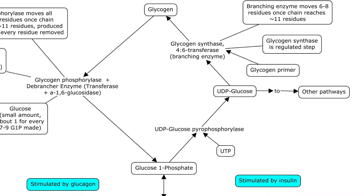UDP-glucose and a glycogen primer can be acted on by glycogen synthase and the 4,6-transferase — otherwise known as the branching enzyme. Glycogen synthase is the regulated step here. The branching enzyme will move six to eight residues once the chain reaches 11 residues long. So basically, you've got a long backbone with residues kept getting added on; once they get 11 units long, the branching enzyme moves them further down the backbone, keeping everything from getting too long. And that gives you your glycogen.